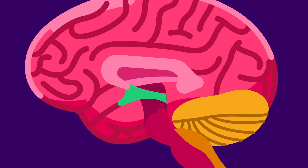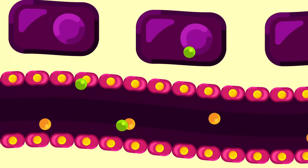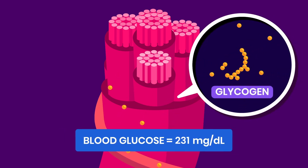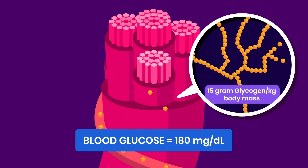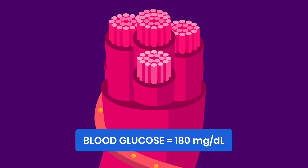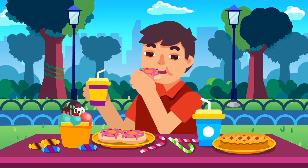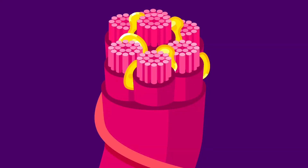These receptors send signals to the hypothalamus area of the brain. As blood glucose becomes too high, the brain sends a message to the beta cells of the pancreas as the effector to secrete insulin hormones, which act on bodily cells so they can take in more glucose. Insulin also signals the liver and skeletal muscles to increase their intake of glucose and store it as glycogen. If the glucose storage is full — 15 grams per kilogram of body mass — the body will store the glucose as fat instead, preventing blood glucose from staying high for too long.